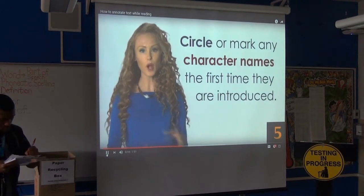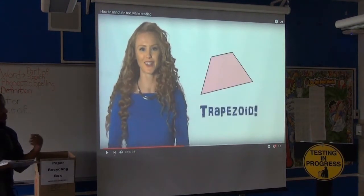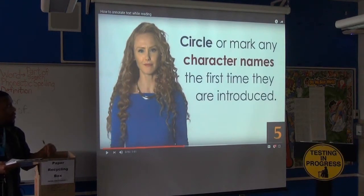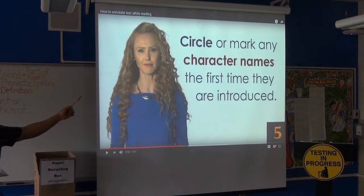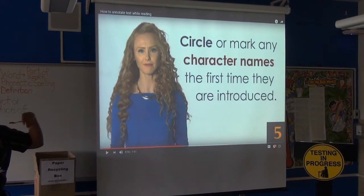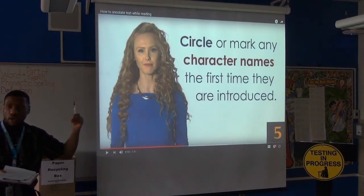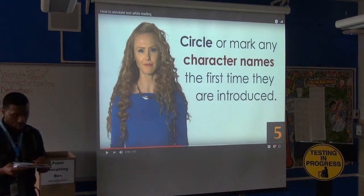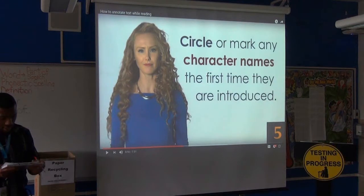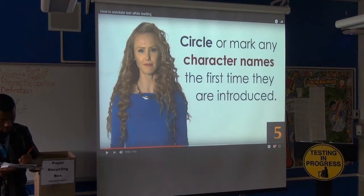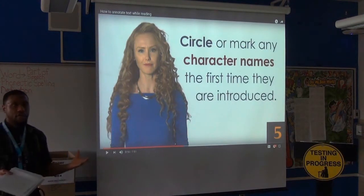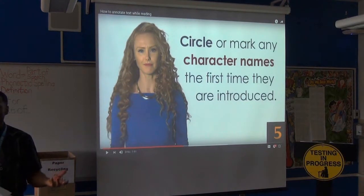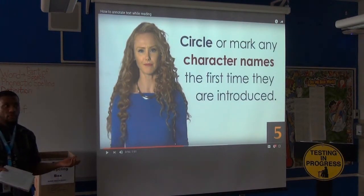Number five: circle or mark somehow — pick a shape — where you see characters' names for the first time. Obviously this applies when reading fiction. You would highlight, underline, or circle where characters are being introduced for the first time. This way, if you're trying to trace a character's involvement in the story, you can go all the way back to when they first appeared.